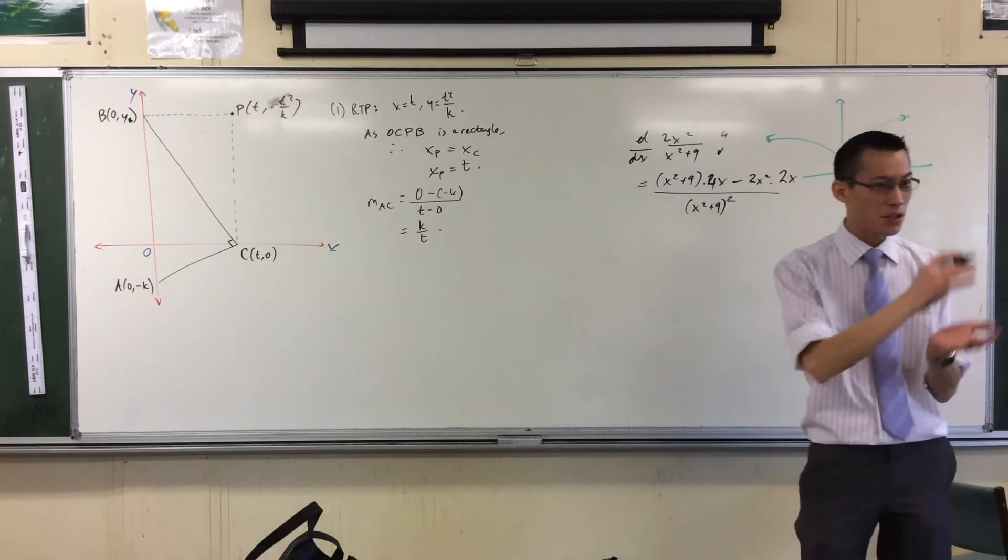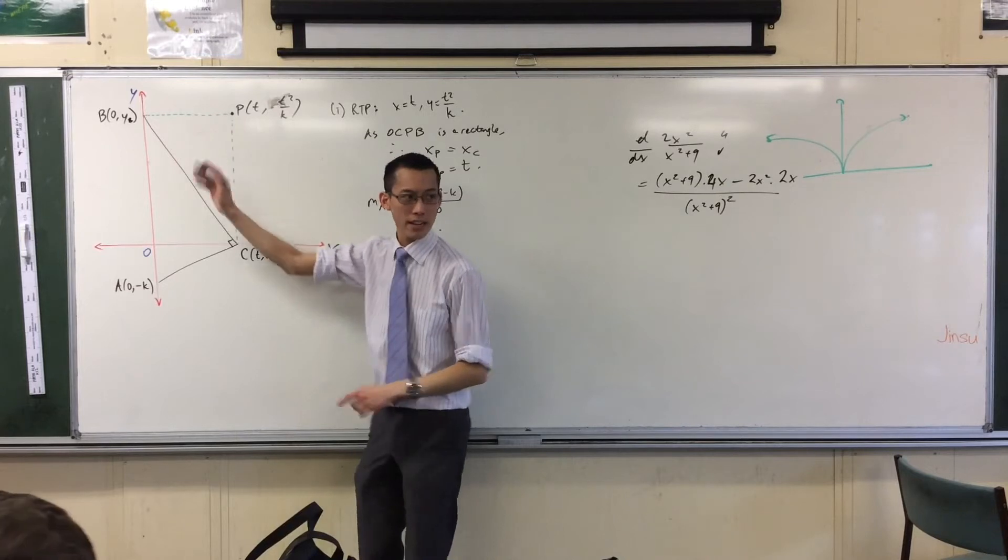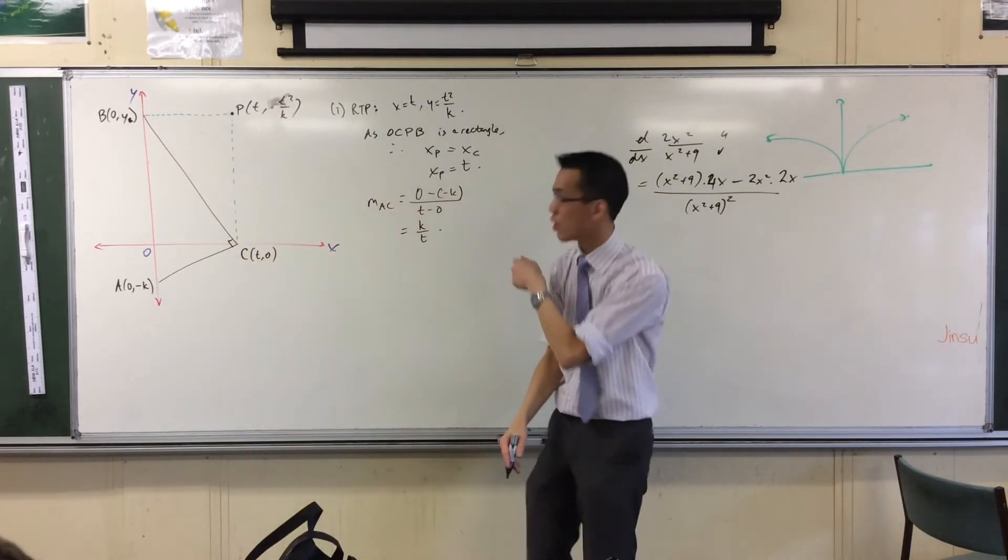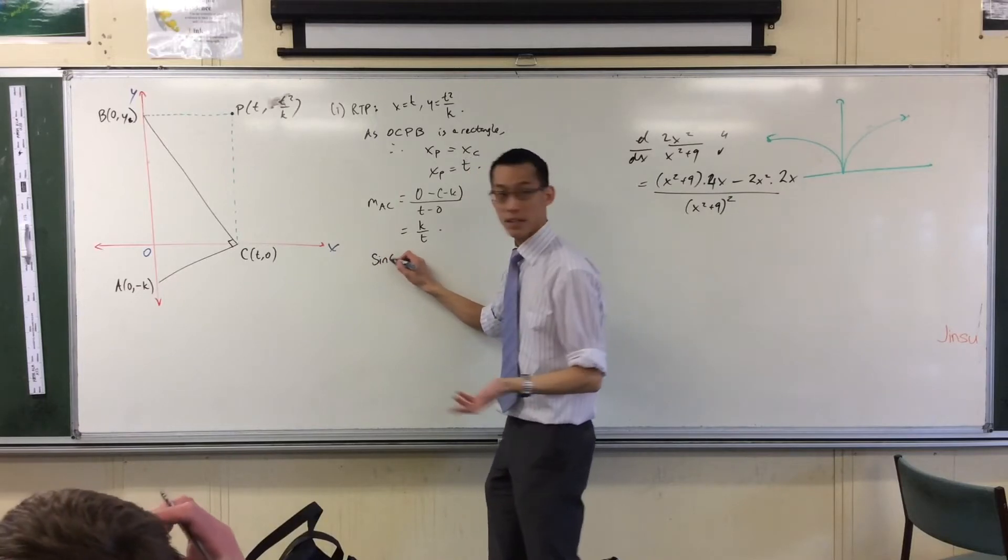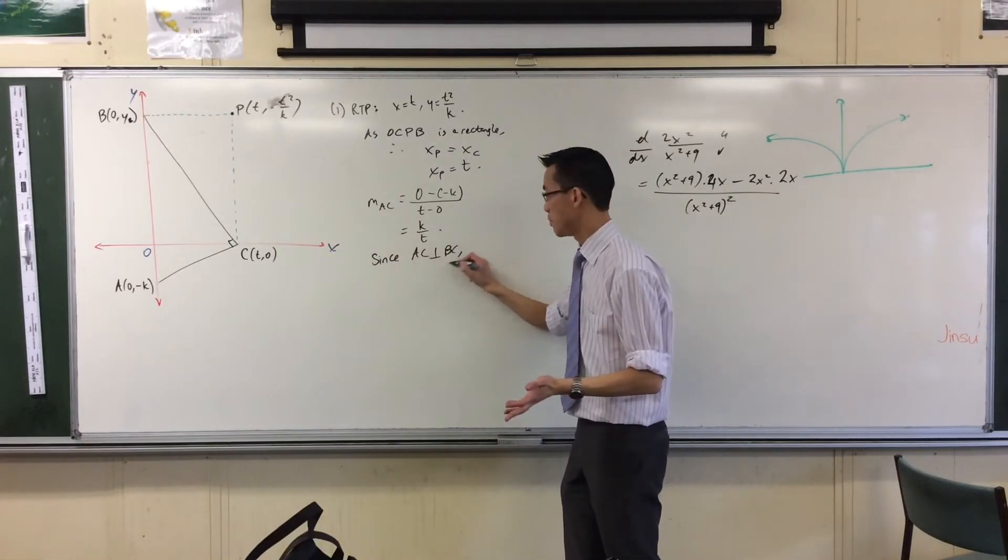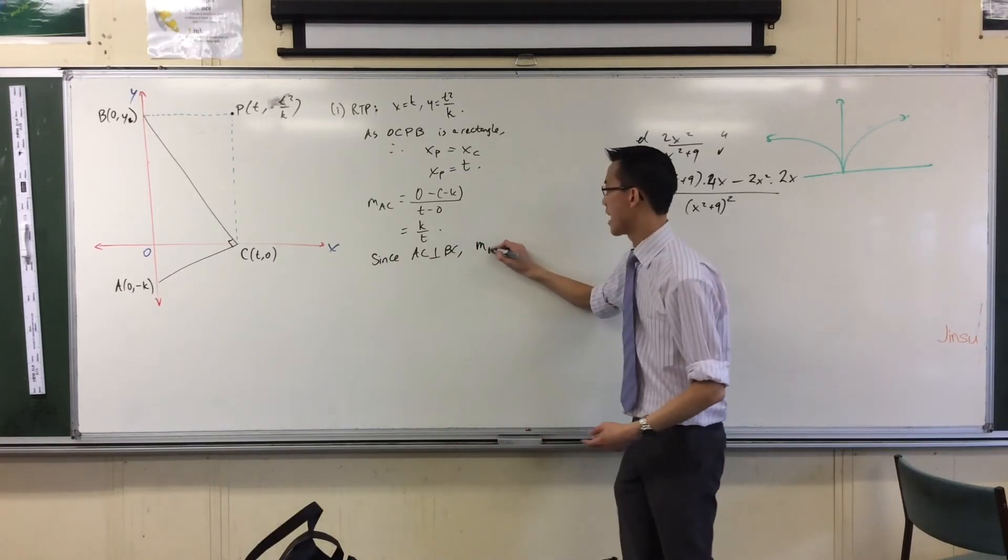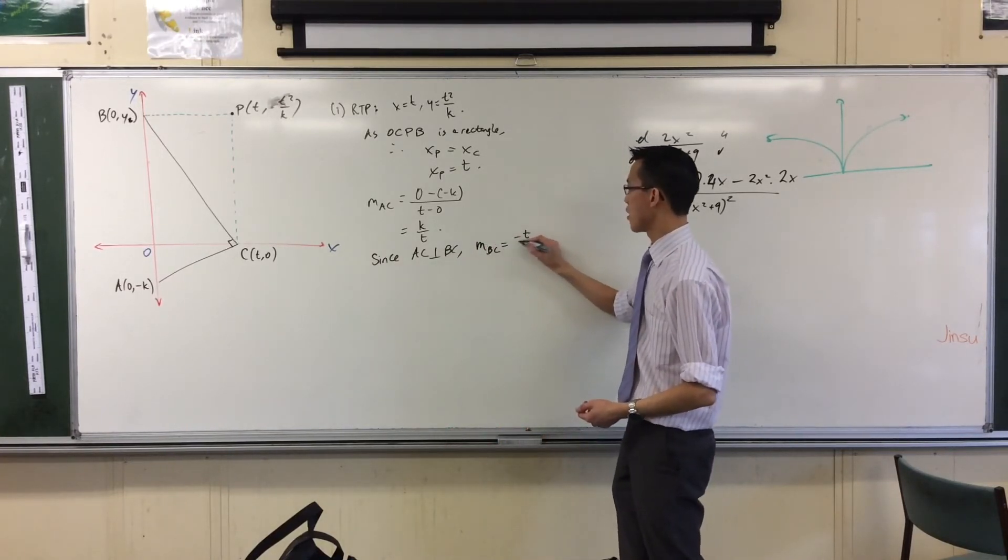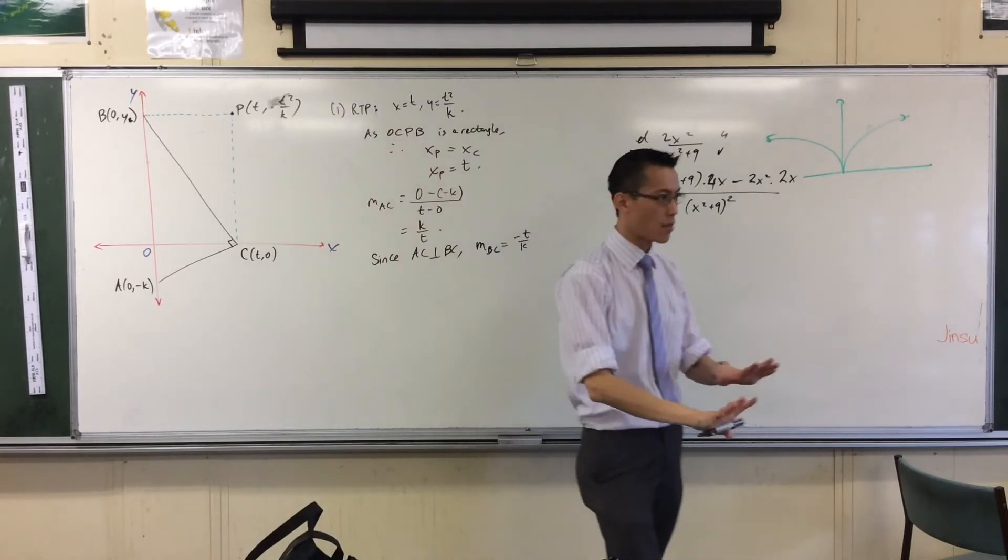But I don't want that line. I'm just using that line as a stepping stone to get to this line. What's the gradient, if this is the gradient of AC, what's the gradient of BC? Minus T over K. So, since AC is perpendicular to BC, I'm just taking the negative reciprocal. That gradient is minus T over K, which of course is very promising.